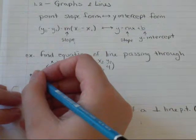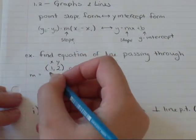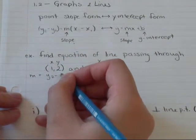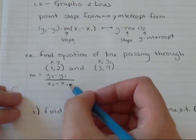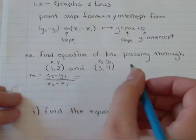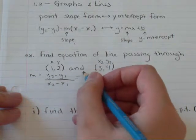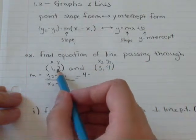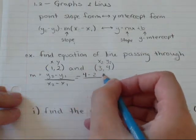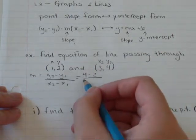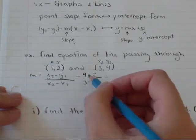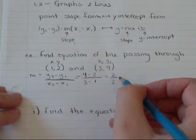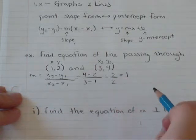First of all, we're going to find the slope. So, m equals y2 minus y1. That's rise over x2 minus x1. So, rise over run. So, I'm going to take y2, which is 4, minus y1 is 2, over x2, 3, minus x1 is 1. I'm going to get 4 minus 2 is 2, over 3 minus 1 is 2. 2 over 2 is just 1.